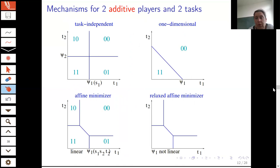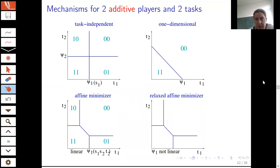The two-machine characterization for two tasks says that for two tasks and two machines with additive costs, every truthful mechanism is either task independent, one dimensional, or a relaxed affine minimizer — a new generalization of affine minimizers. One-dimensional mechanisms are very simple: they choose between two possible allocations, such as a bundling mechanism that gives both tasks to one player. This is the most important case for our proof.